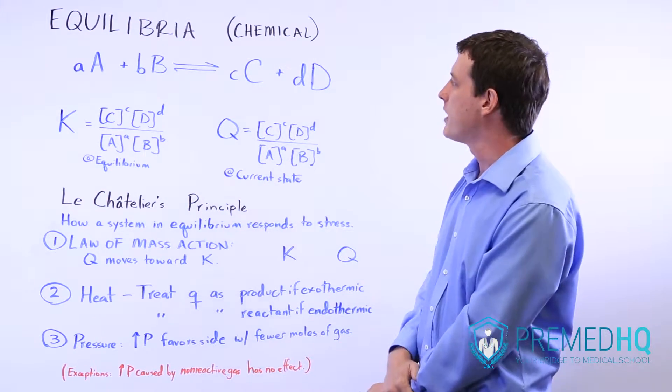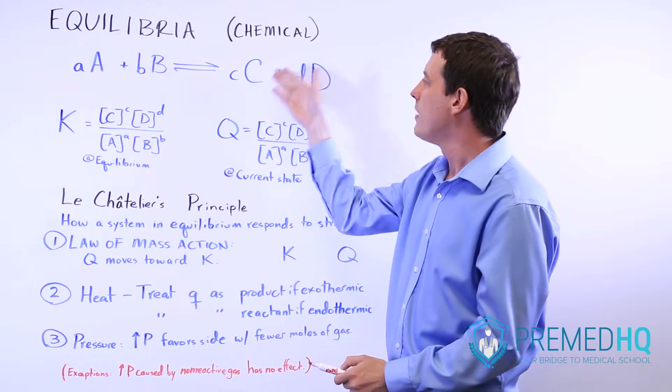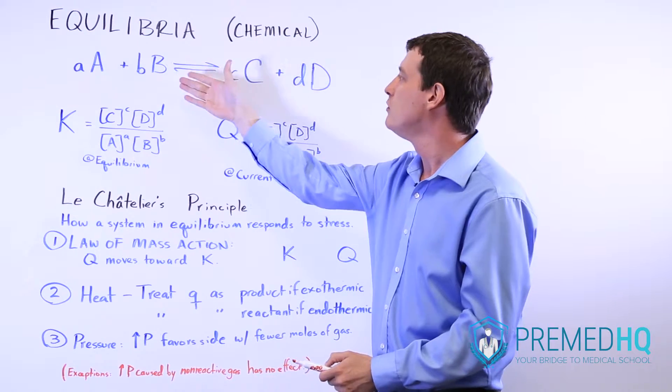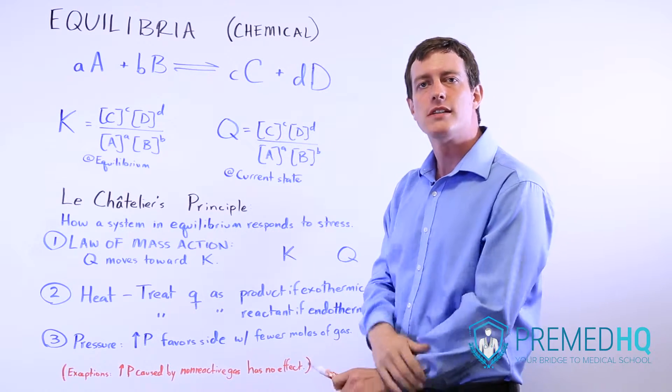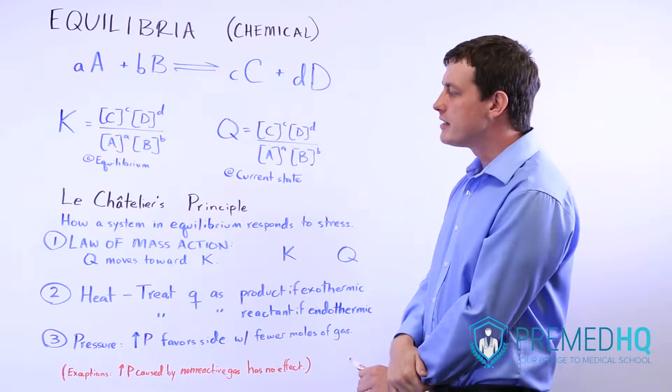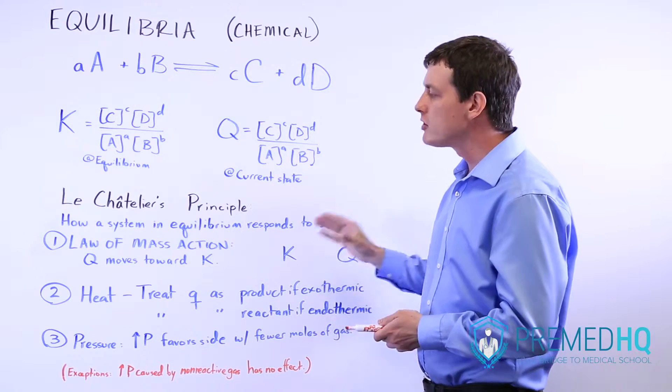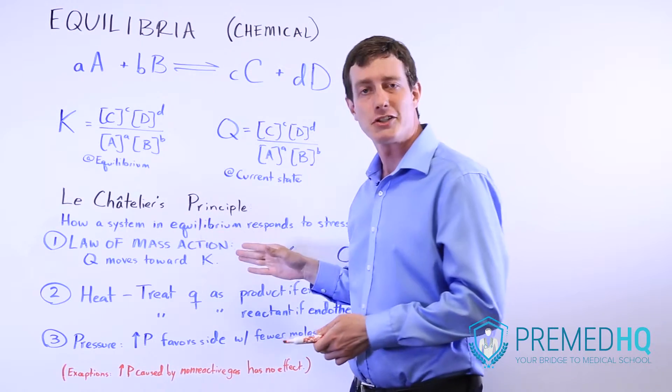A lot of times that means that you add more of a reactant or add more of a product. You might remove a reactant or something that causes it to no longer be in equilibrium. There are three different components of Le Chatelier's principle, the first of which is very famous and it's known as the law of mass action.